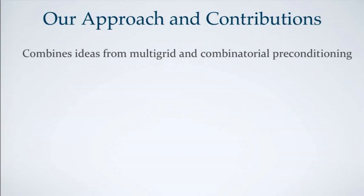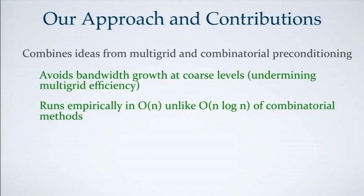Our solver combines ideas from multigrid and combinatorial preconditioning. The main problem with multigrid in terms of efficiency is the increase in bandwidth at coarser levels. We overcome this by interleaving coarsening steps with sparsification steps — taking the coarsening ideas from the multigrid literature and combining them with sparsification ideas from the combinatorial literature. Instead of starting with a tree and adding edges (as combinatorial preconditioning does), we start with the original graph and drop some edges. This is much more efficient in practice, since constructing a tree is already O(N log N), and we can achieve something much more local at O(N).